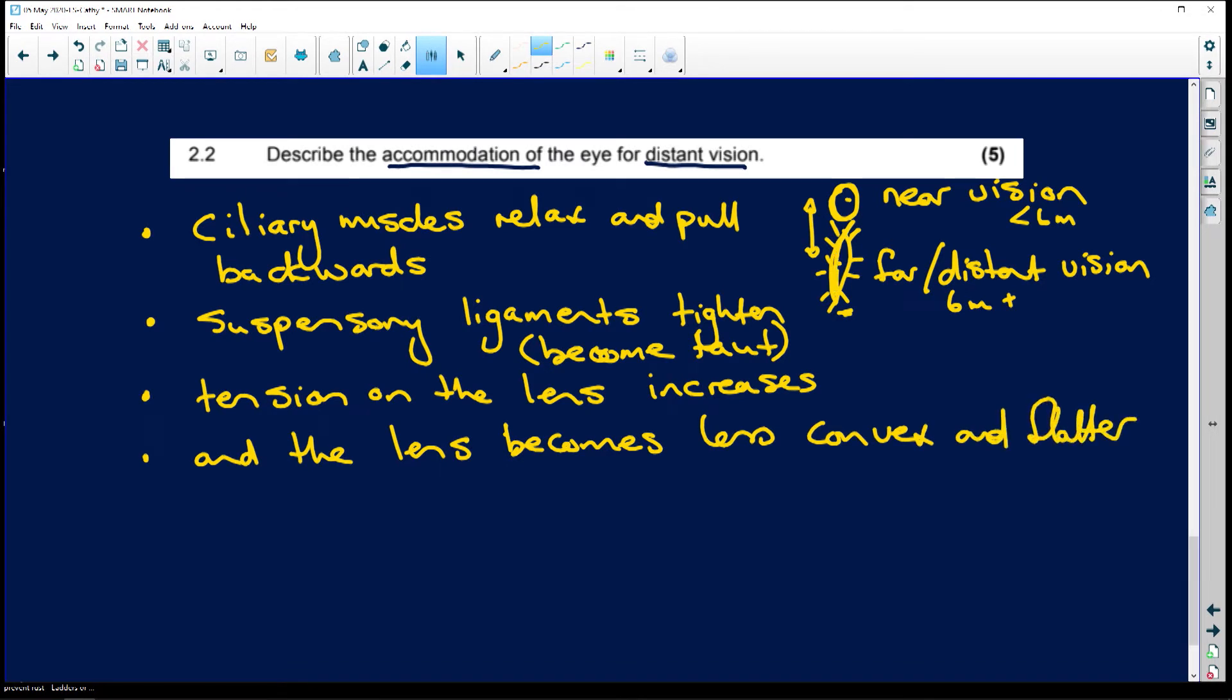Just like here in this diagram, the lens becomes less convex and it becomes flatter.